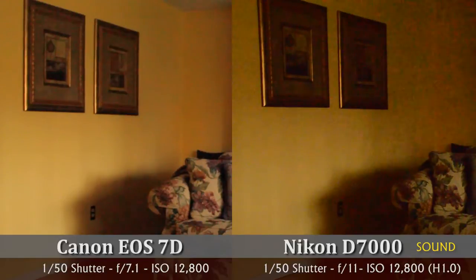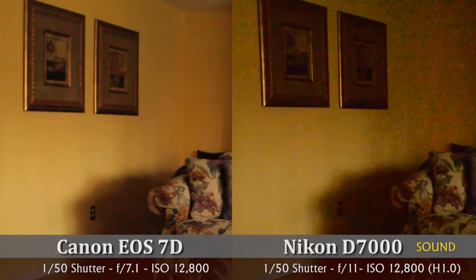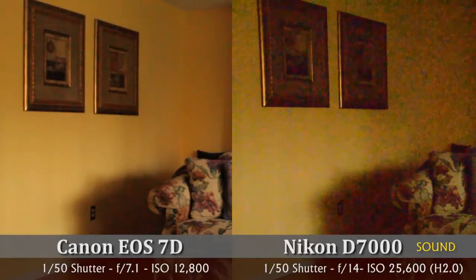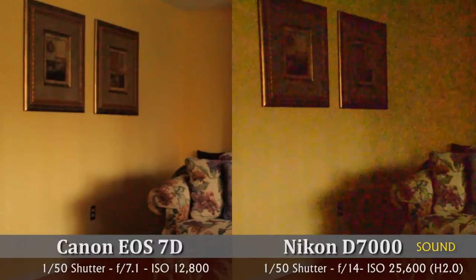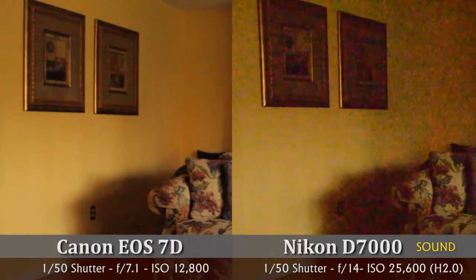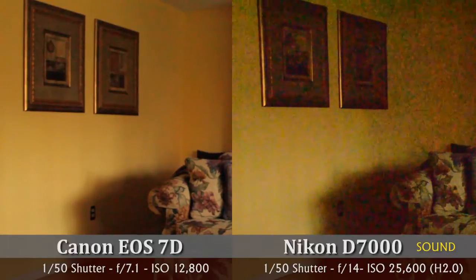Right now I'm recording on the Nikon at f11, 1/50th of a second, using high 1.0 as the ISO. And now this is the Nikon again using high 2.0, f14, and 1/50th of a second. On the LCD screen it just looks terrible.